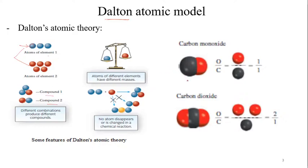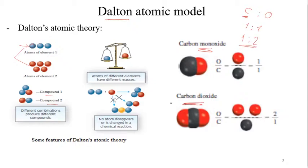For example, the combination between carbon and oxygen in a one-to-one ratio gives carbon monoxide, while the combination of carbon with two oxygen atoms in a one-to-two ratio gives carbon dioxide.